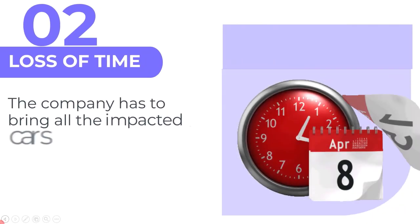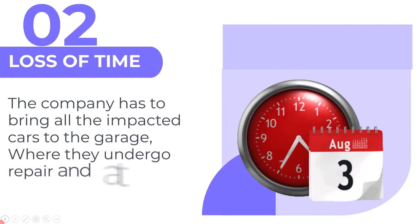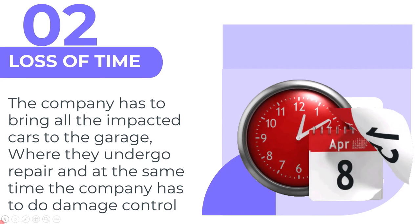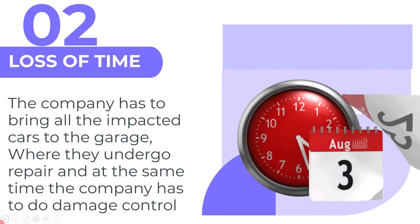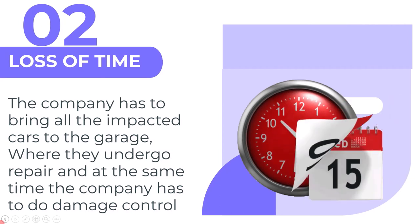The second impact of faulty software is loss of time. Using the same example: due to the recall, the company has to bring all impacted cars to the garage where they undergo repair, and at the same time the company has to do damage control. All this takes lots of effort and time.